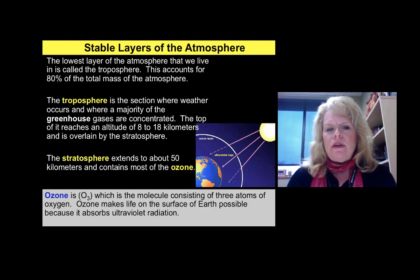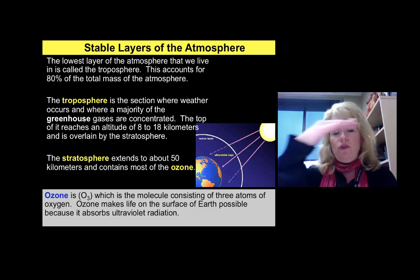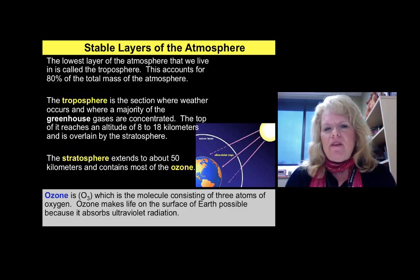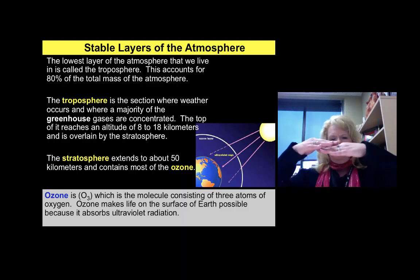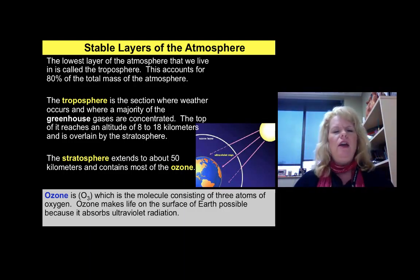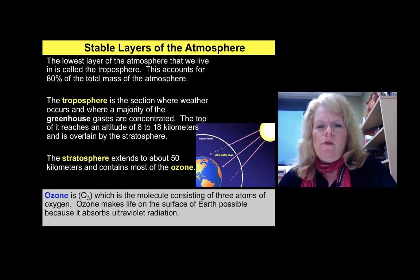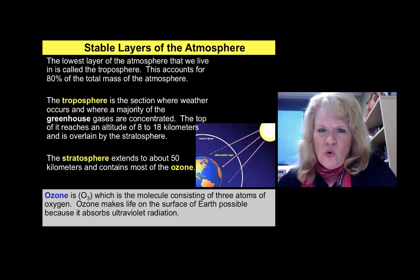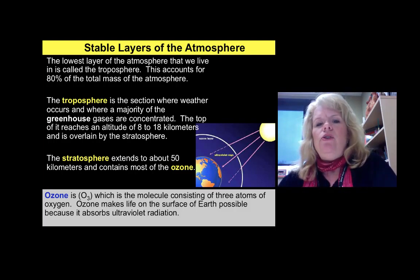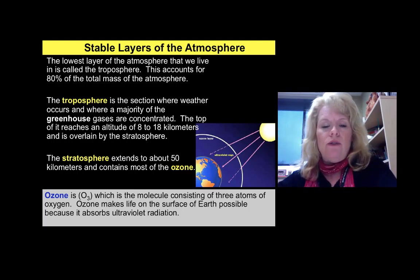There is a layer between the troposphere and the next layer called the stratosphere, which helps protect us from ultraviolet radiation. The tropopause exists right above the troposphere and below the stratosphere. The stratosphere extends about 50 kilometers above the Earth's surface. At the base of the stratosphere, we have the ozone layer — made up of three oxygen molecules bonded together — which plays a role in reflecting or absorbing ultraviolet radiation. A hole in the ozone layer allows more direct solar radiation to reach the Earth's surface.